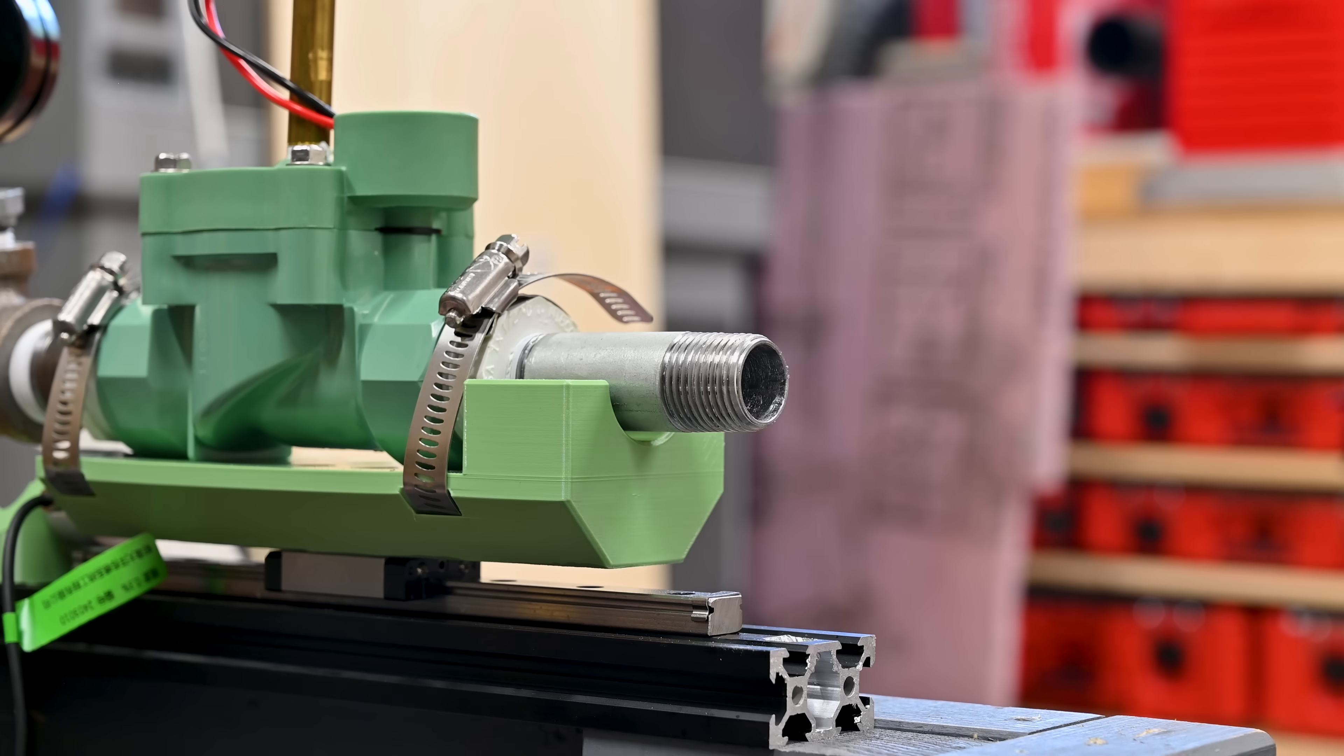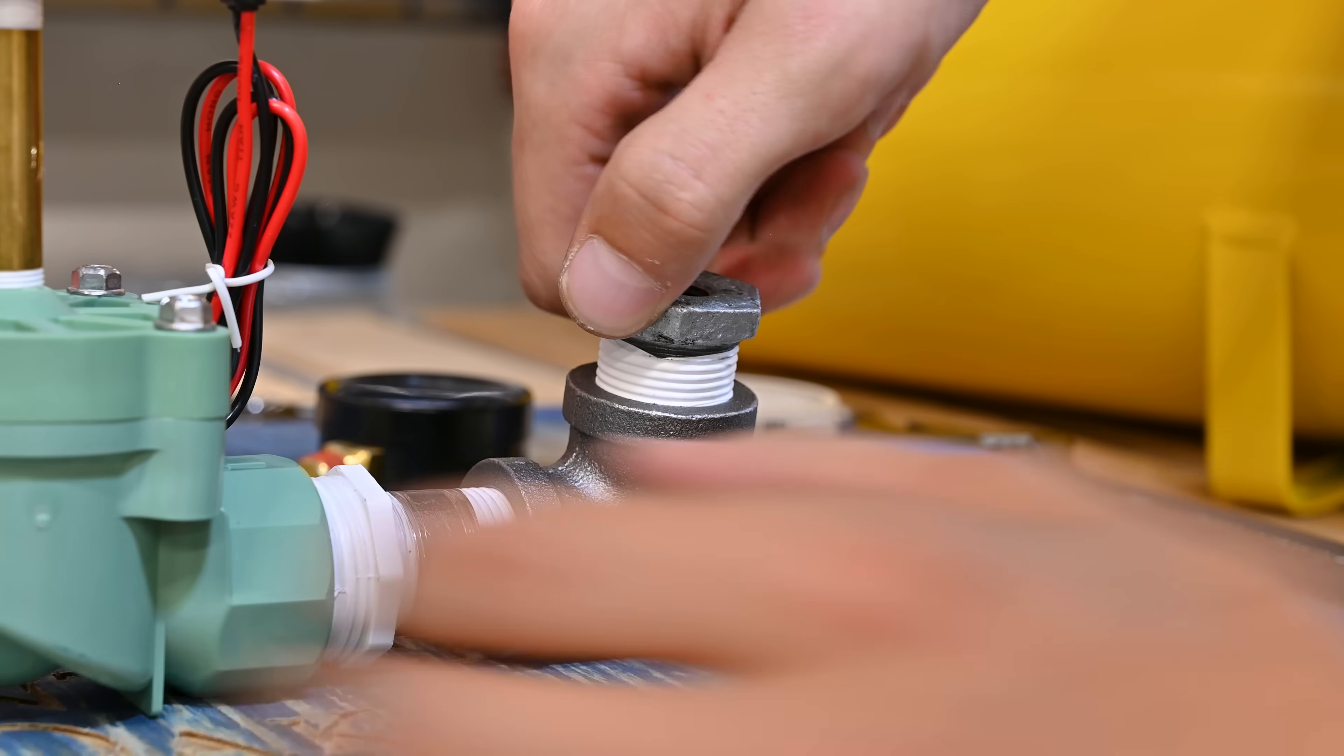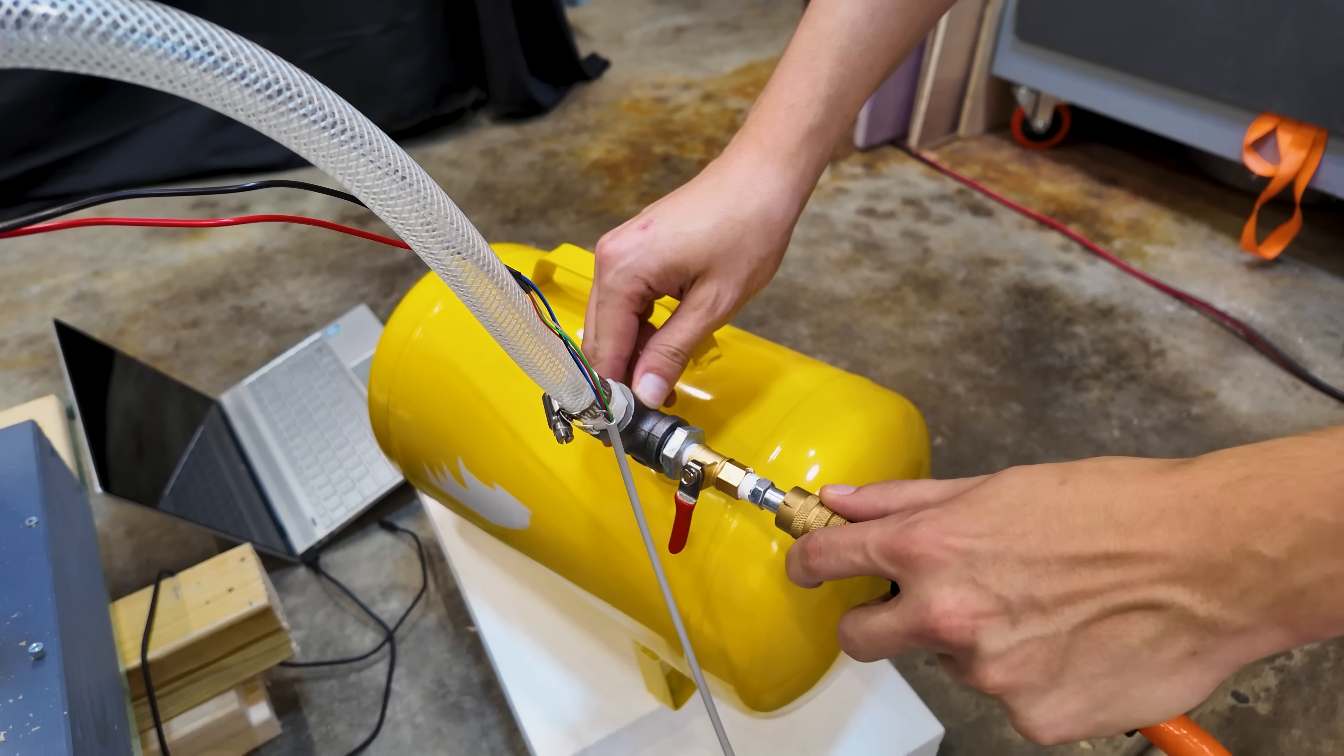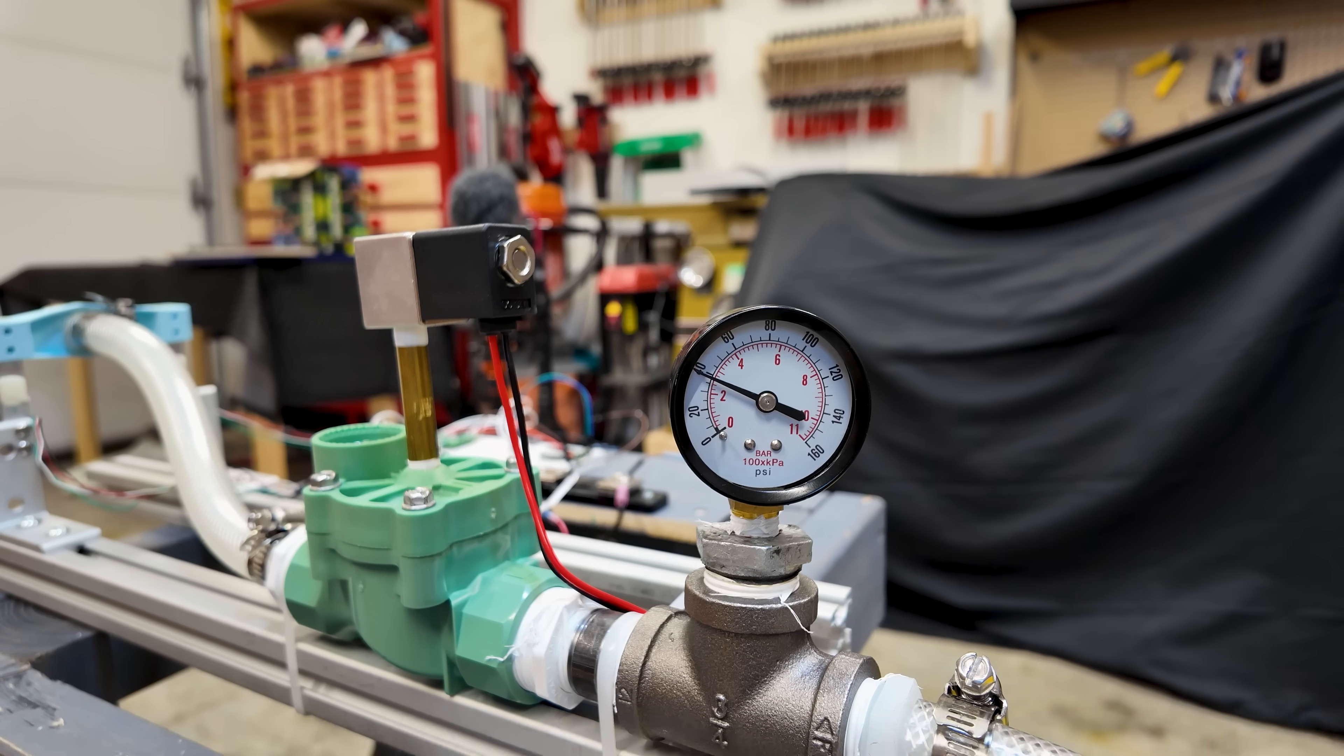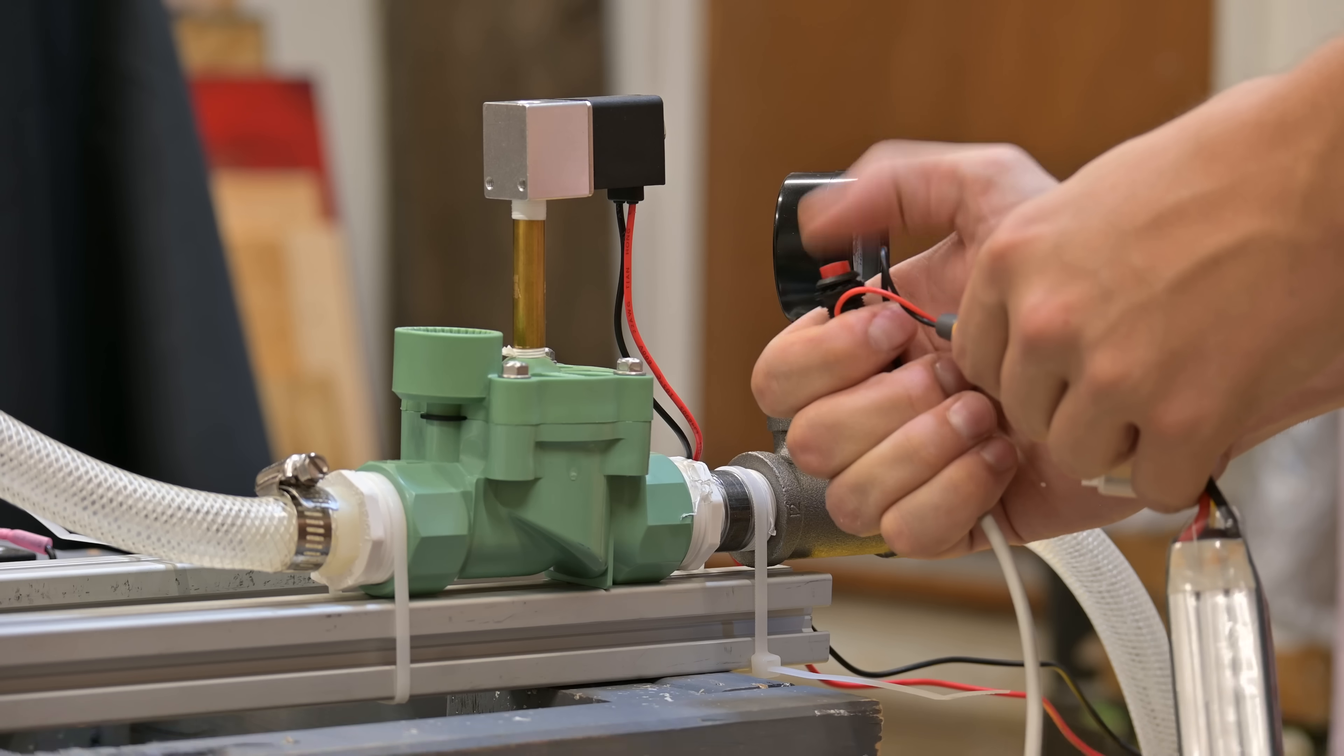We could do some quick math to calculate this, or we could just test it out. To run these tests, I built this test stand by raiding my local Home Depot's plumbing aisle. I have a 5-gallon air tank, which will be filled to 110 psi. The air flows from this tank to a solenoid valve. These valves are normally used for sprinkler systems, but I modified it to have a higher flow rate and less restriction.